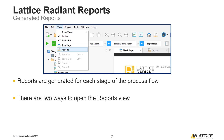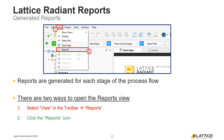There are two ways Radiant's Reports View can be opened. The first way is to select View from Radiant's menu bar and then select Reports from the drop-down that appears. The second way is by selecting the Reports icon from Radiant's toolbar, as can be seen from the figure on the slide.